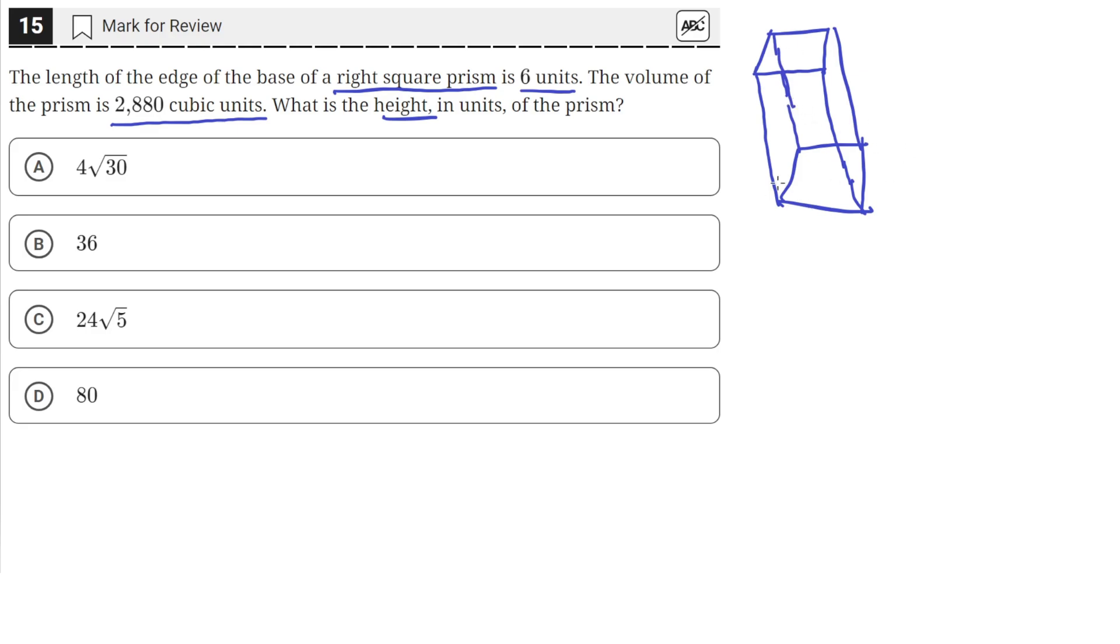And we're told that the square on the bottom and the top has the length of 6 units. So this is 6 units and that is 6 units. What we need to find is h, the height of this prism.